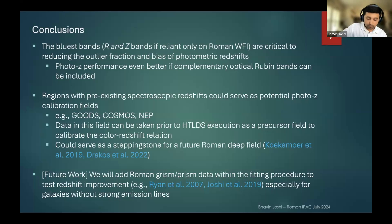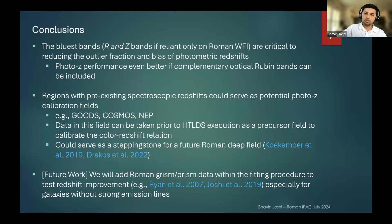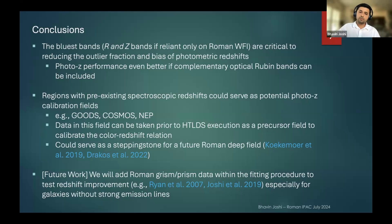For future work, we are thinking of adding Roman grism and prism data within the fitting procedure to estimate spectrophotometric redshifts — combining photometry with the low-resolution prism data. We think this will help particularly for galaxies that do not have strong emission features. This approach has previously been done for HST grism data by Russell Ryan and myself, and we're planning to extend it to Roman as well.